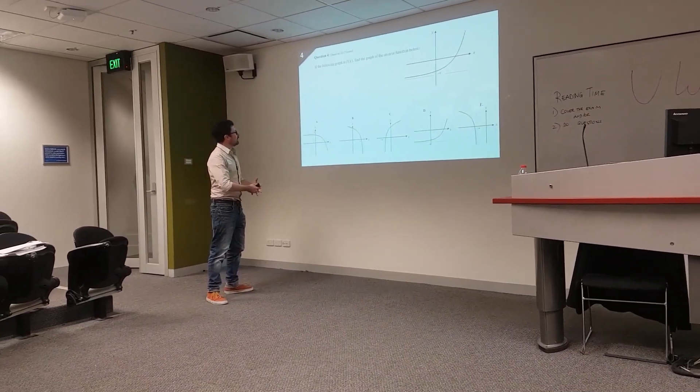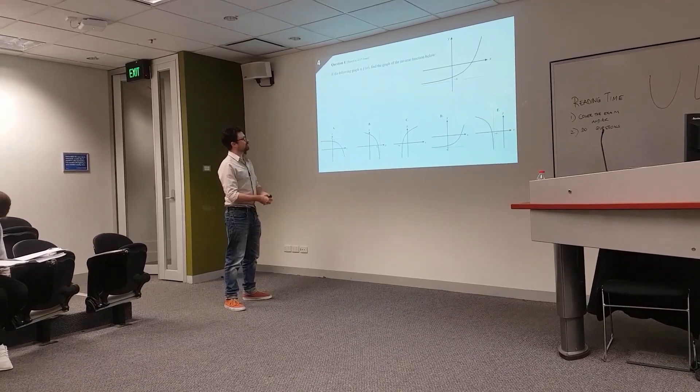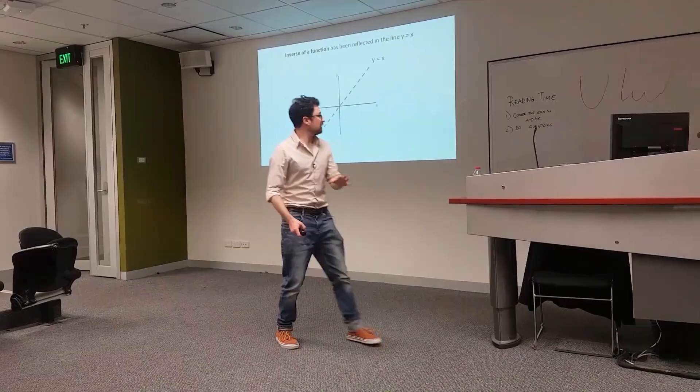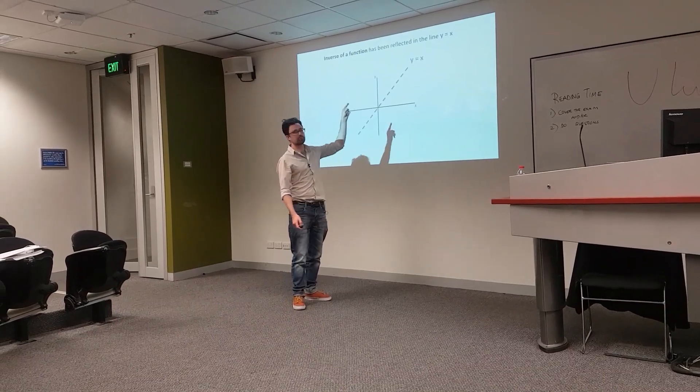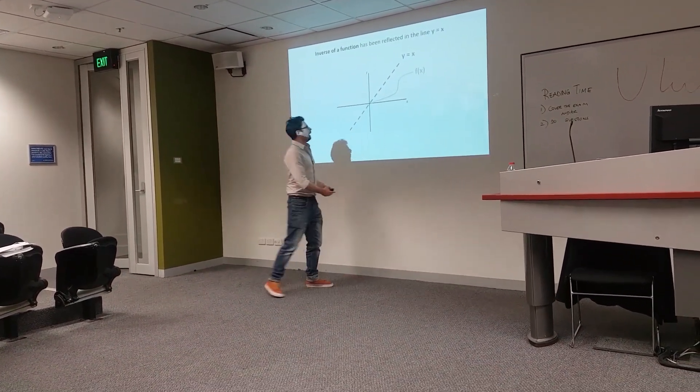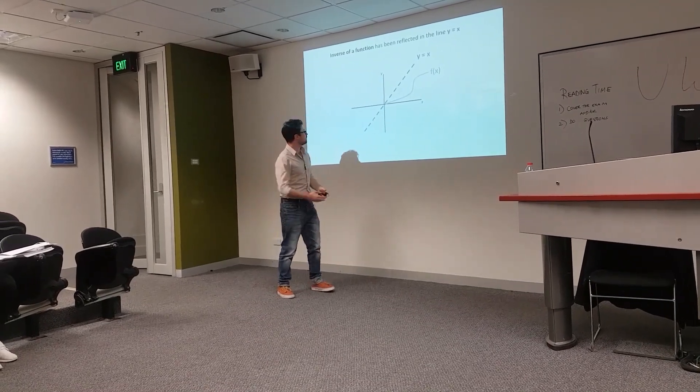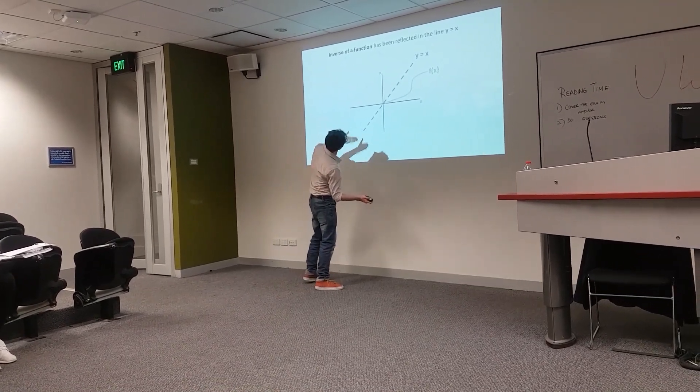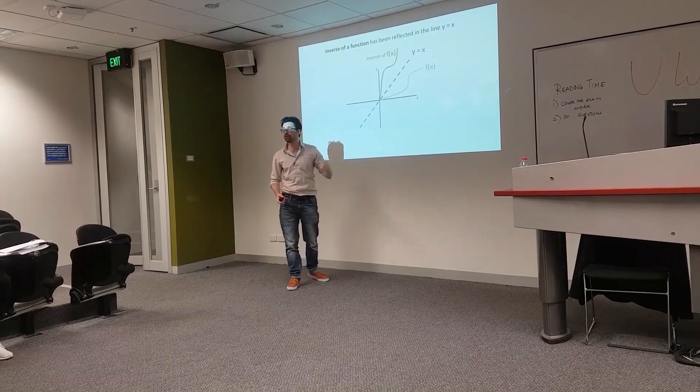If the following graph is f, find the graph of the inverse function below. The definition of an inverse function is something which is reflected in the line y equals x. So here's a function here. If we want the inverse of this function, we turn our heads to the side, we just do a mirror image of it, and that's the inverse of f(x).